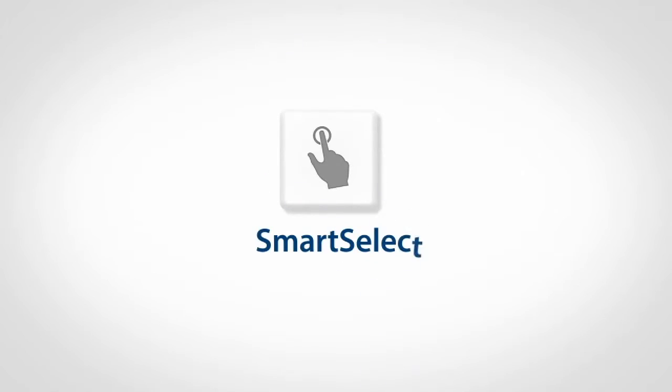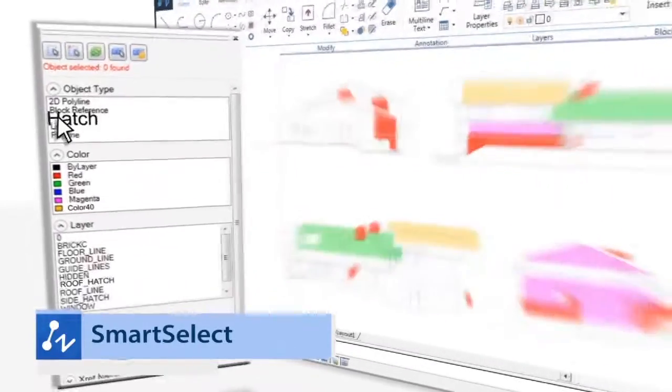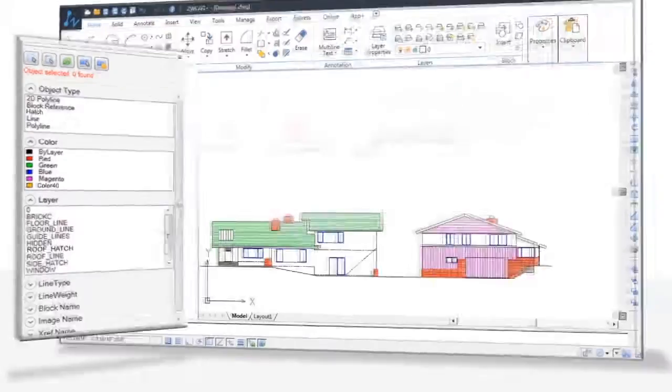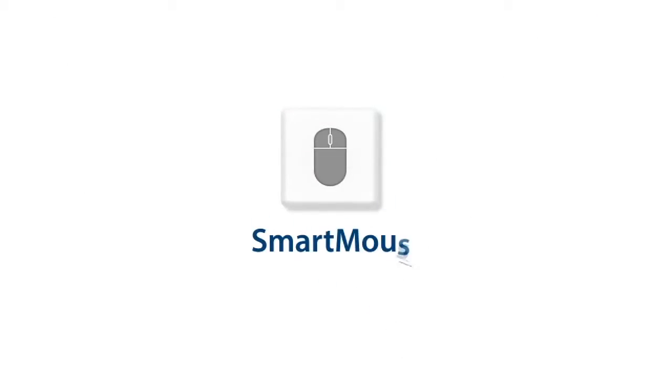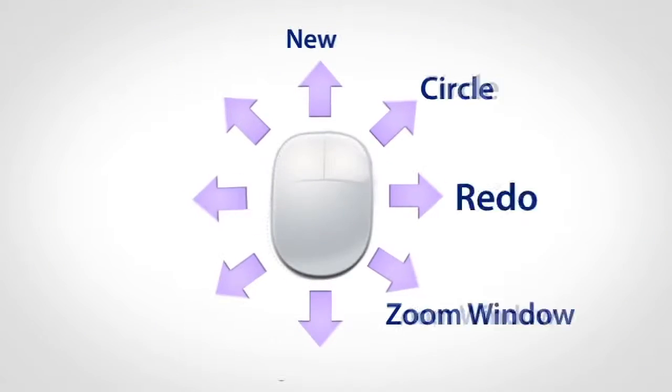Smart Select lets him choose his desired object intelligently. With Smart Mouse, Brian simply moves his mouse in different directions to trigger commands.